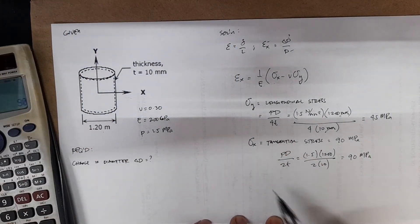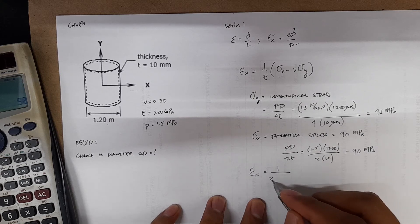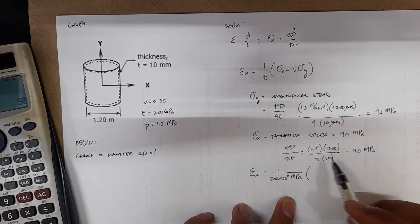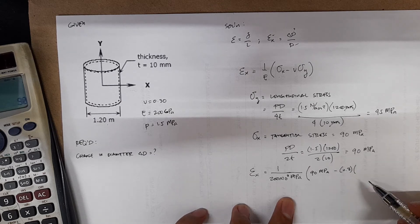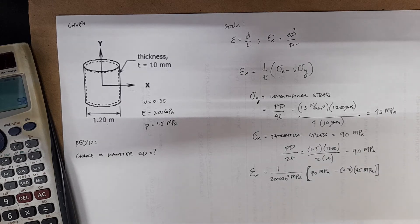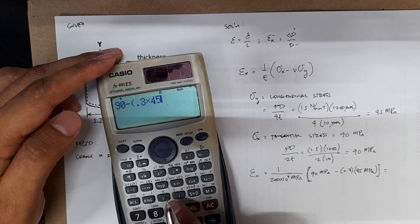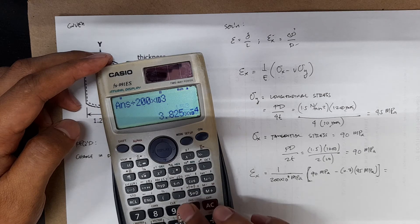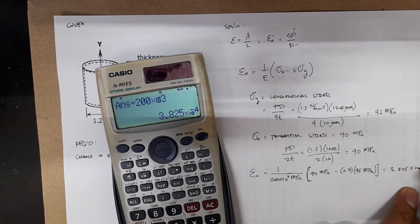Now you have stress x and stress y, you can now calculate for the strain along the x direction. 1 divided by that's 200 times 10 to the 3 megapascals, times your stress x which is 90 megapascals, minus v which is 0.3, then you have stress y which is 45 megapascals. We have strain which is equal to, we have 90 minus 0.3 times 45. So that's 3.825 times 10 to the negative 4.